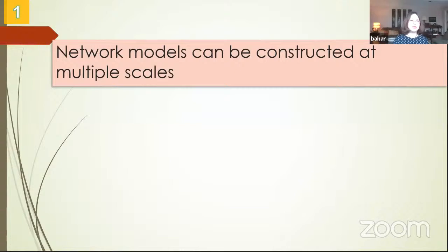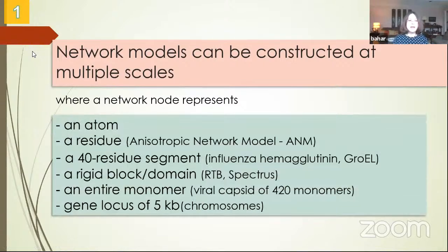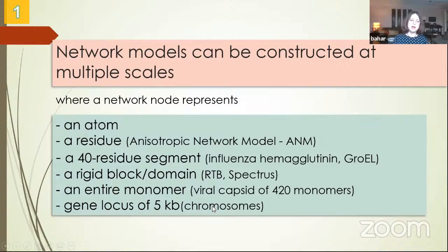That's what we're doing with network models, because we construct them at multiple scales. For example, at the atomic scale a network node represents a single atom, or we can represent a residue by a network node in the isotropic network model — the most broadly used elastic network model. Or we can have segments, rigid blocks, or an entire monomer, as in viral capsids. Finally, in chromosomes, we have gene loci of 5,000 bases represented by single nodes.